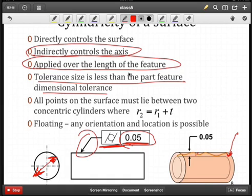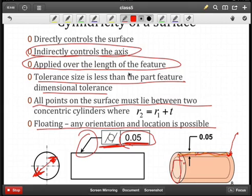Similar to circularity, all points on the surface must lie between two concentric cylinders. The key point in terms of difference here, though, it's over the entire length. And therefore, we have two concentric cylinders over that entire part feature. However, we don't consider any location or orientation of the part feature with respect to another part feature.